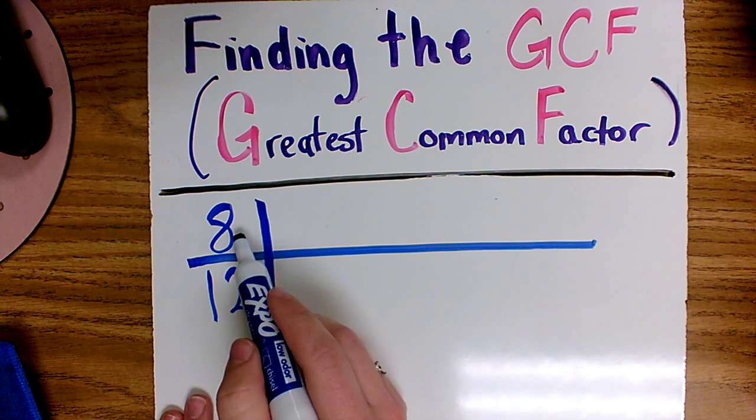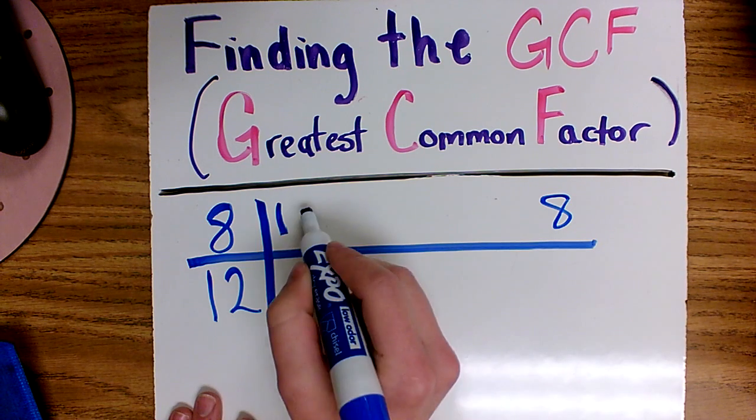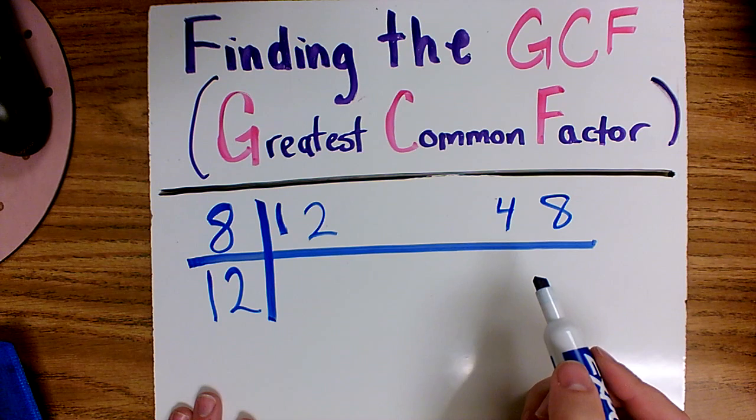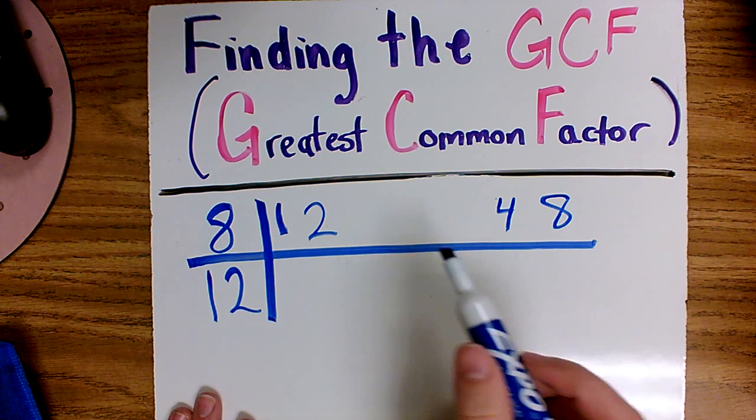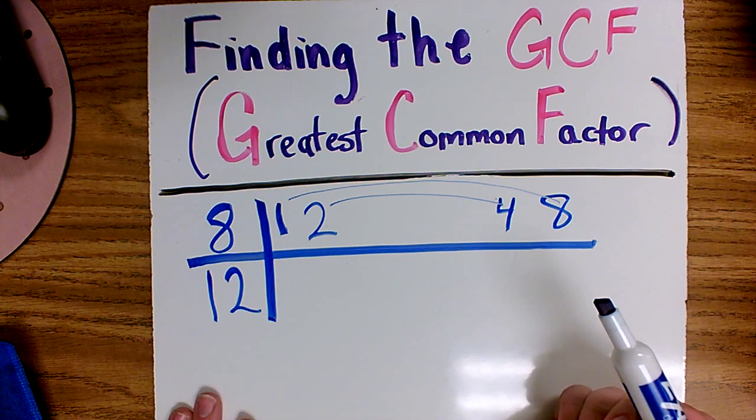So for 8, I always start with 1. I know 1 times 8 equals 8 and 2 times 4 equals 8. 8 doesn't have any other factors, so I just go ahead and connect those. Those are the only factors it has.